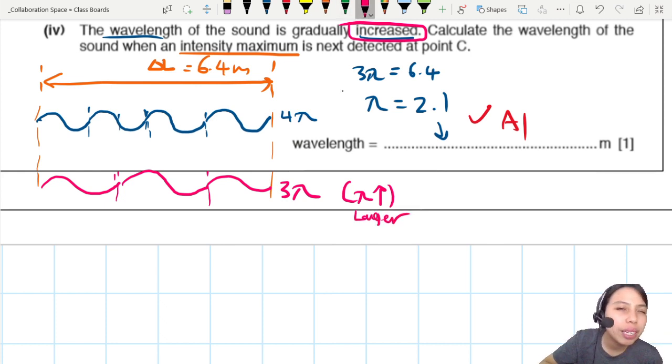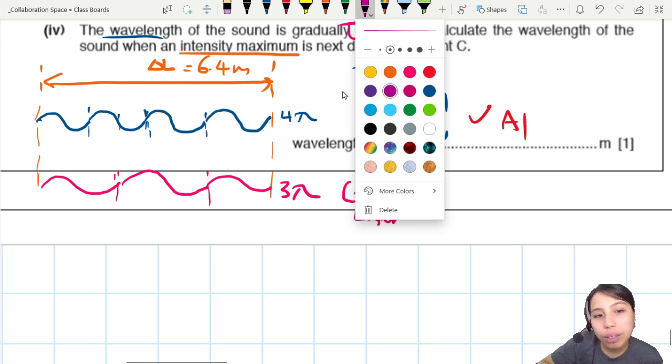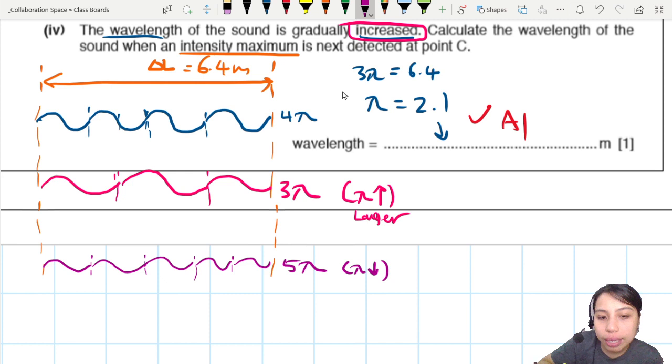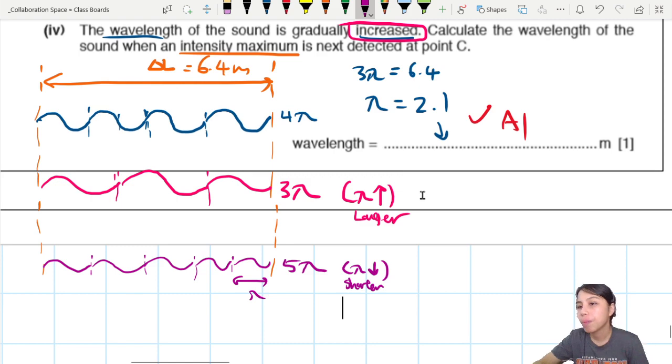If you want to think about what happens if the wavelength becomes shorter. If wavelength becomes shorter, the next maxima will occur when you can fit just nice 5 wavelengths into the path. How do I draw 5? I think something like this: 1, 2, 3, 4, 5. So, here is 5 wavelengths. And that, you can only fit that if your wavelength, each of them, becomes shorter. So, be careful with the trick. Wavelength increase means you can fit lesser of them within the 6.4 path difference.